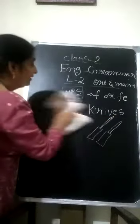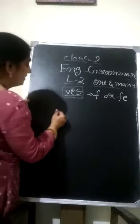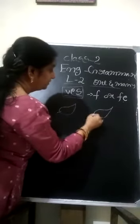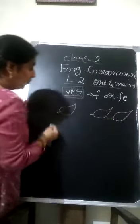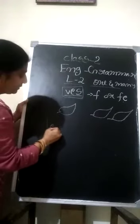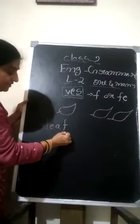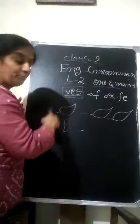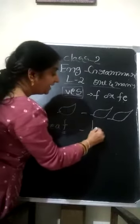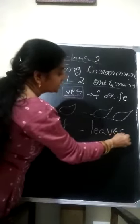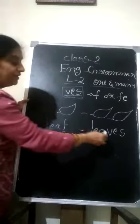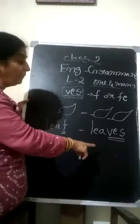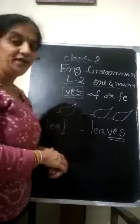Like that, another word is leaf. This is the leaf — L-E-A-F. It ends with F. What is the plural form of leaf? The plural form is L-E-A-V-E-S — leaves. Instead of writing F, we are adding VES. So, leaves is the plural form.